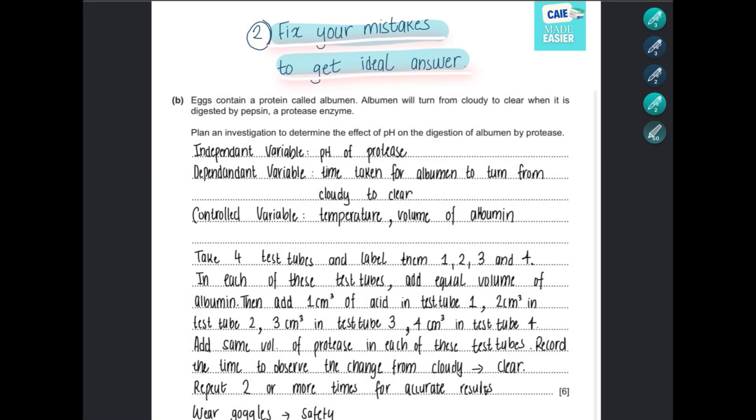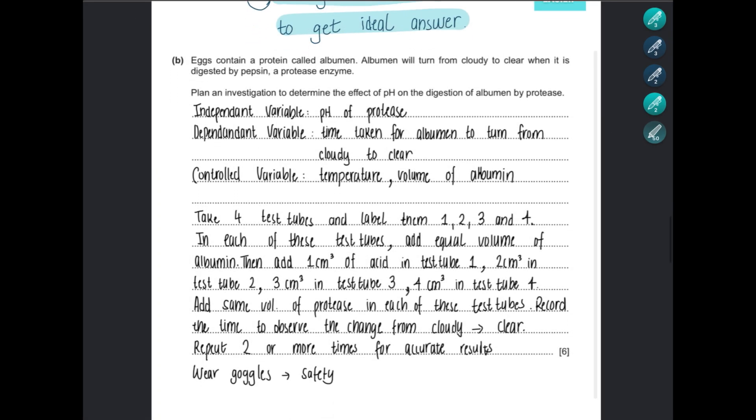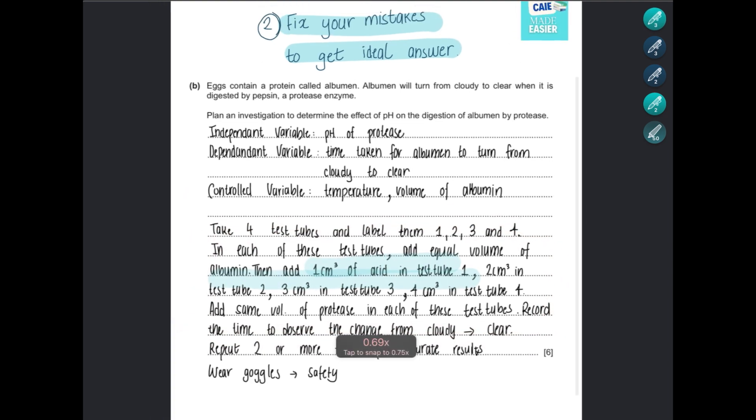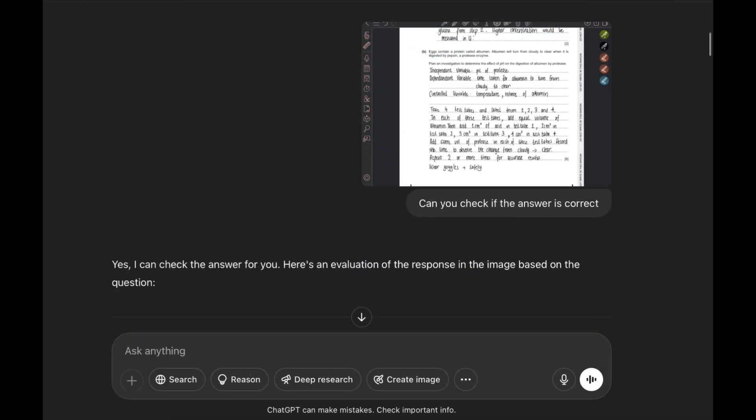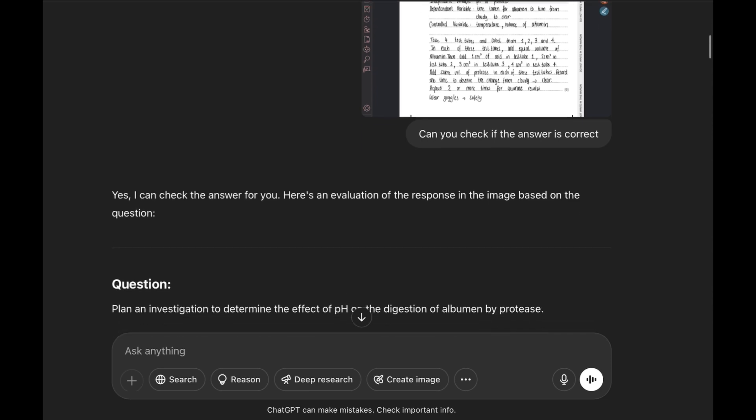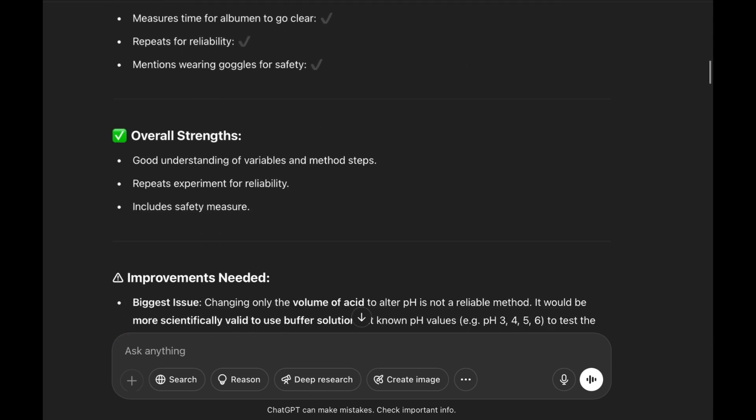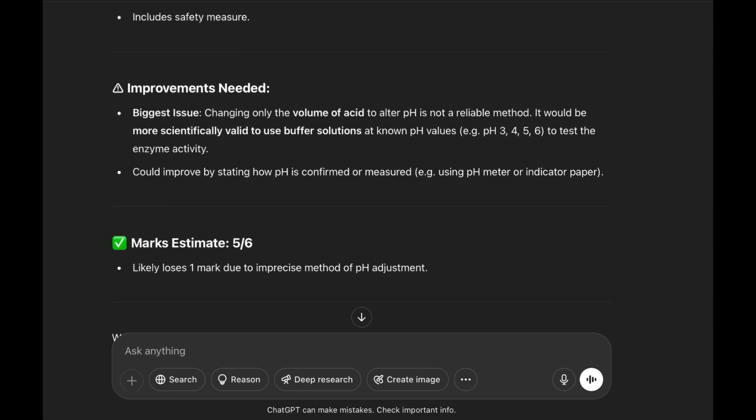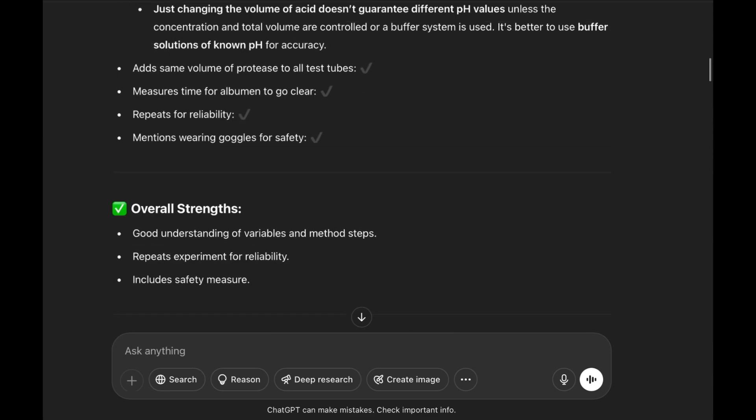Secondly, you can also use it to fix your mistakes and get an ideal answer. Here I already wrote—we have a question here and I wrote my answer based on independent, dependent, control variables, and then I have safety, accuracy, and safety measures. In the method, I have made some mistakes. Now I will ask ChatGPT to improve it. I just pasted it here: 'Can you check if the answer is correct?' It did check my answer and I got my one mistake here—it's around five by six points. This is also very helpful if you want to improve your answer.